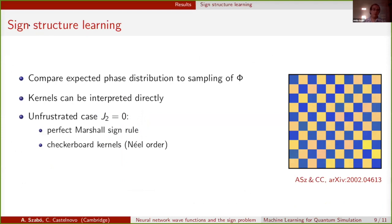Finally, to say something about the actual sign structures of the wave function, we can go and take a sampling of the phases phi that are given by our neural network and compare it to the expected distribution of the signs. But also because our neural network ansatz is so simple, we can go and directly interpret the kernels as well. If we go to the unfrustrated case, we know the answer. We want a perfect Marshall sign rule and indeed our network gives that to us with some minor fluctuations around the true Marshall sign rule.